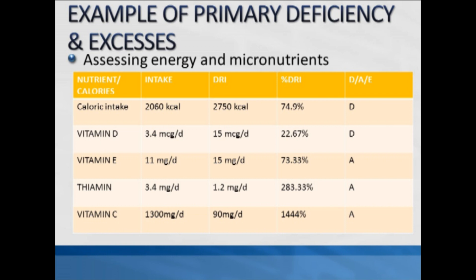When somebody's intake is less than 75 percent of required calories, that intake can be considered at high risk of being suboptimal. We also know that if caloric intake is more than 25 percent over the recommended intake, that intake could be considered excessive. At 74.9 percent, this person's caloric intake is certainly less than 75 percent, so their caloric intake is at high risk of being deficient — we give them a D.